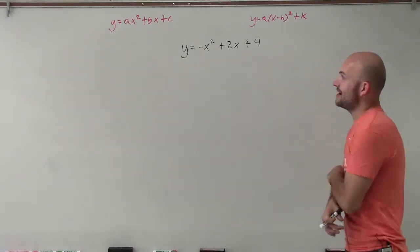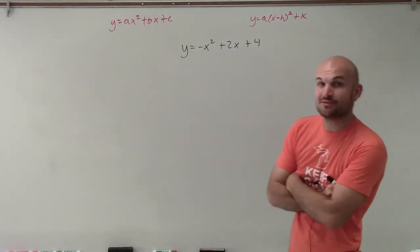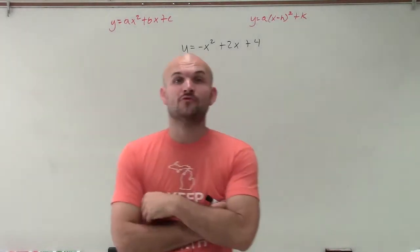Welcome. So what I have here is y equals negative x squared plus 2x plus 4. And what we're going to do is we're going to solve by completing the square.